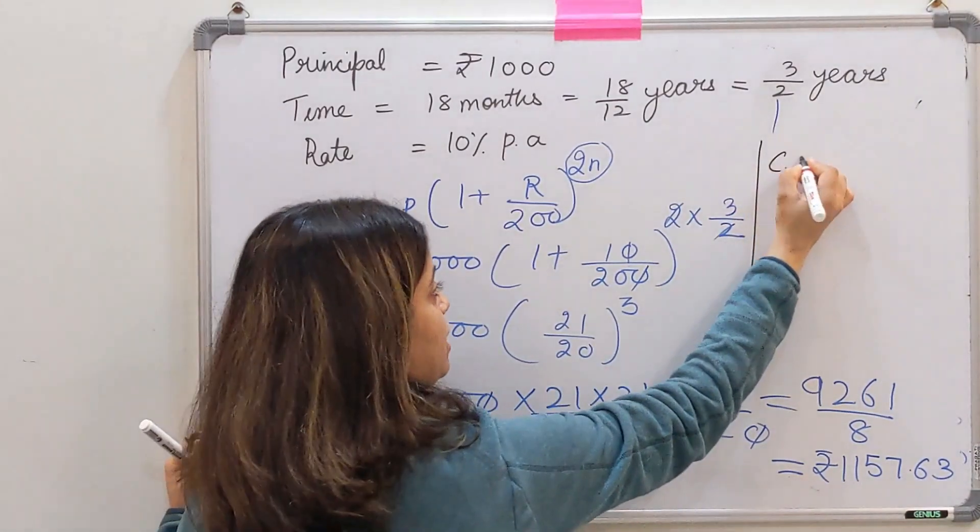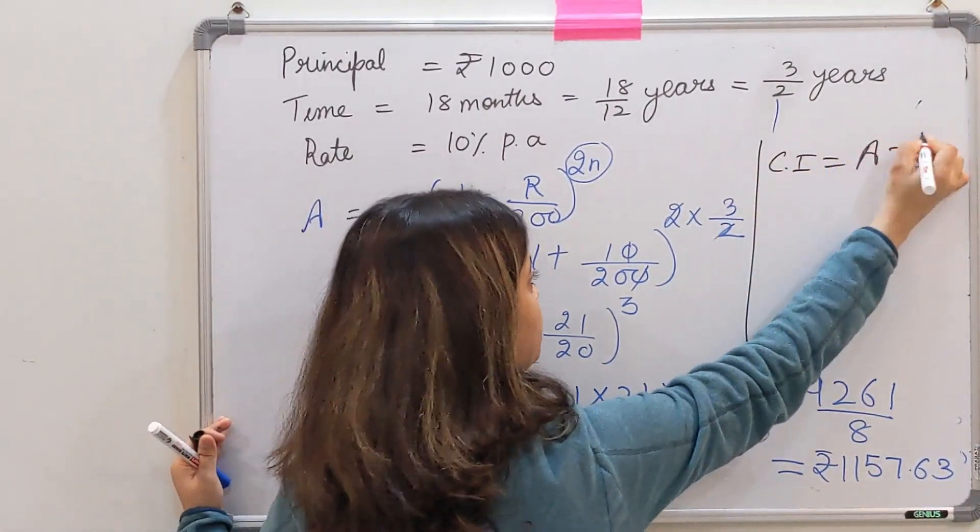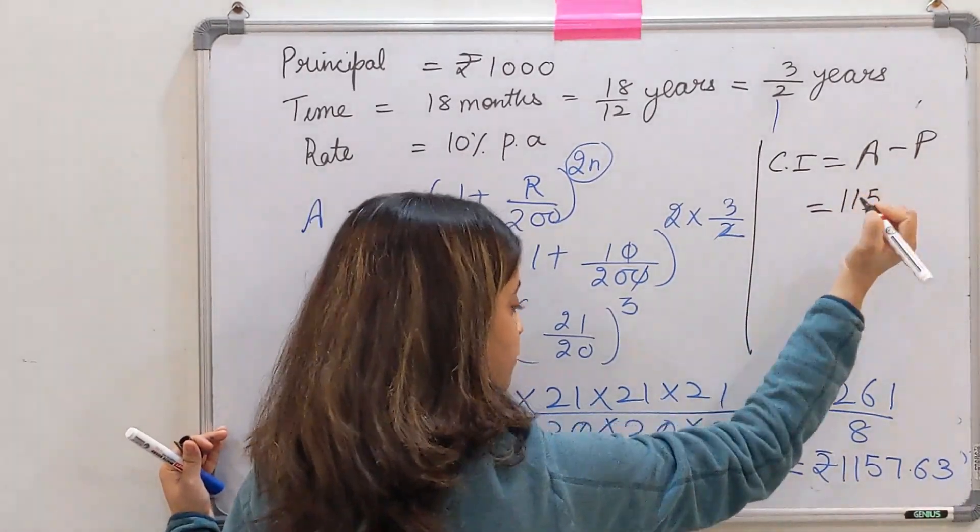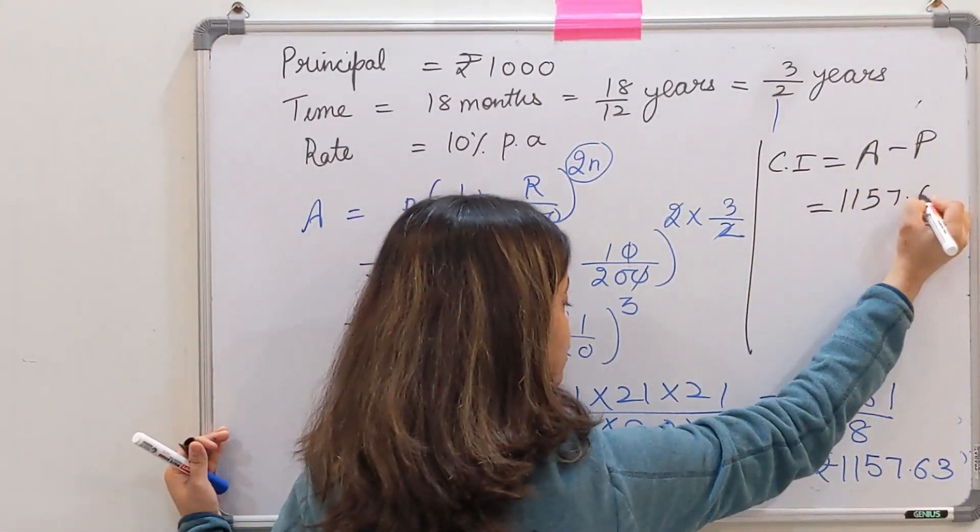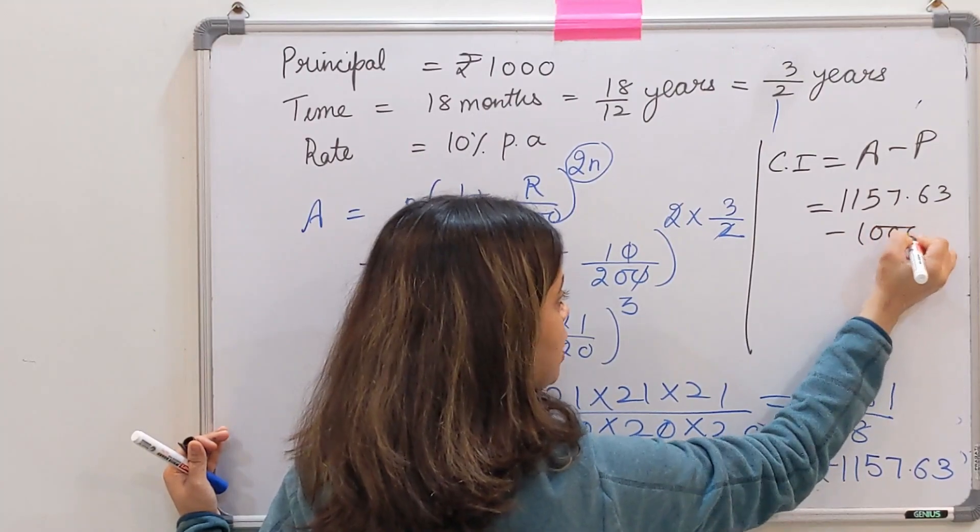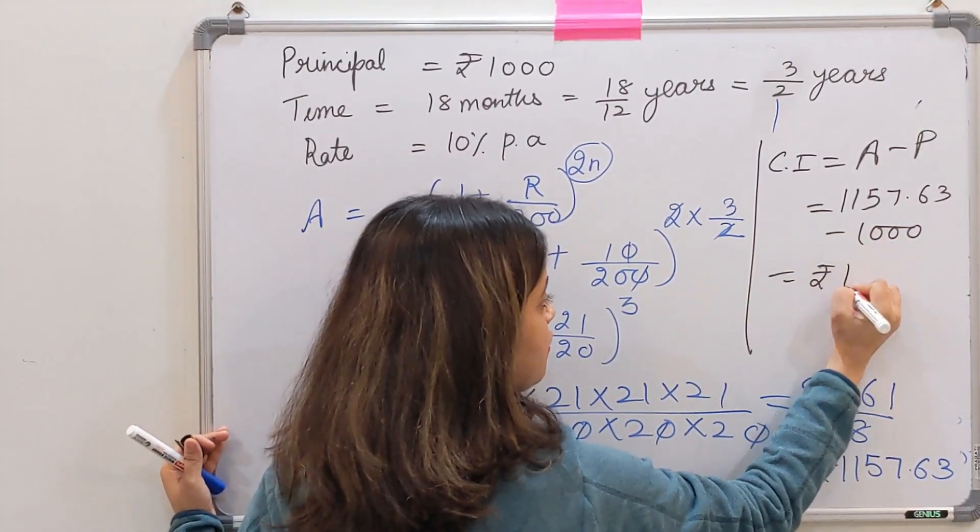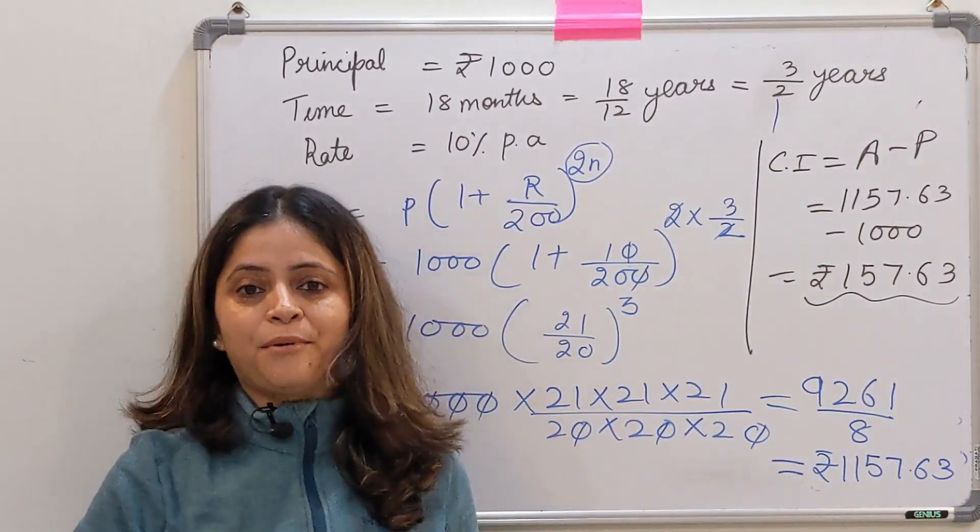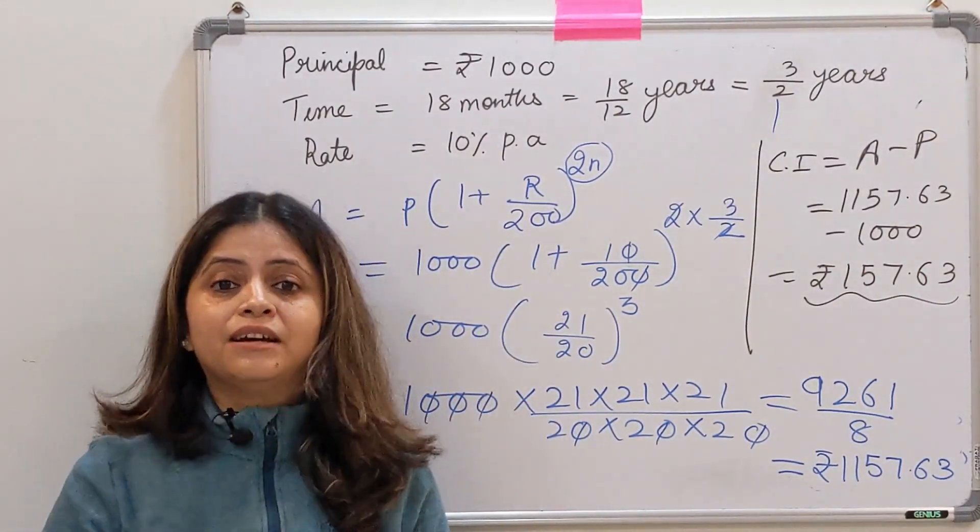So देखें से हम solve कर सकते हैं that मेरा compound interest है amount minus principle. Amount क्या है? 1157.63 minus 1000, which is rupees 157.63. So here we have got the compound interest when interest is compounded half-yearly.